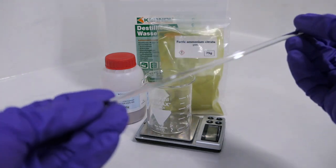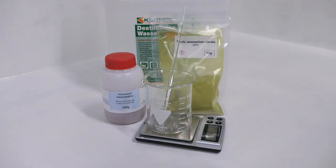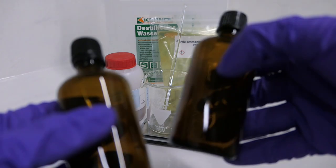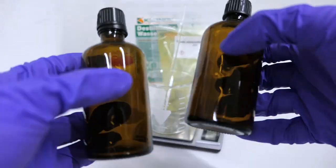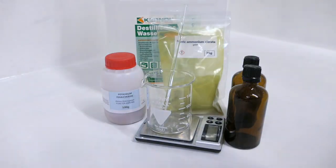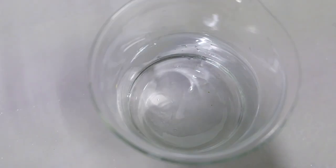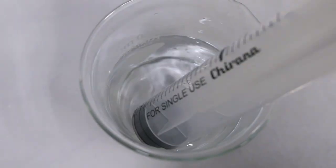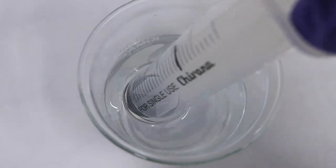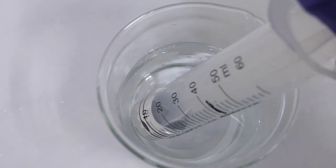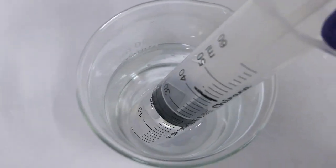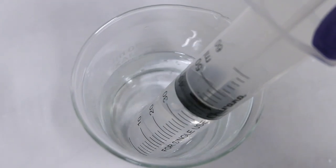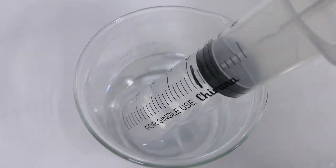Start preparing solution A by measuring the amount of distilled water. For this purpose I'm using a syringe. My storage bottles are 150 milliliters, that's why I'm using 100 milliliters of water. If you have already pre-bought the solutions you can feel free to skip this part.